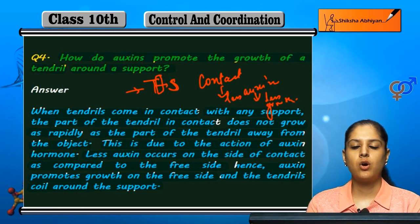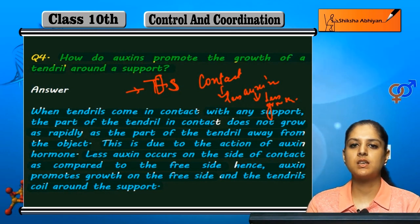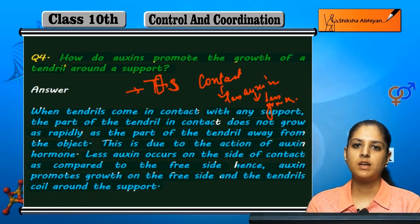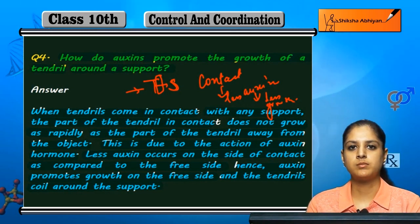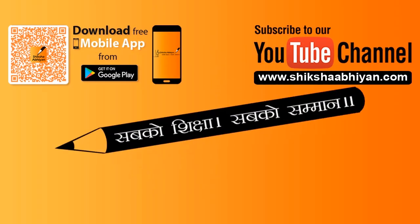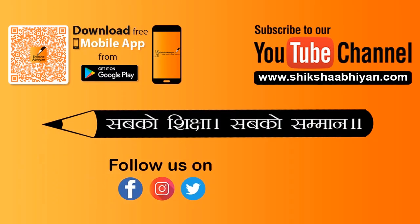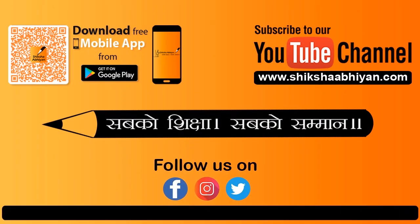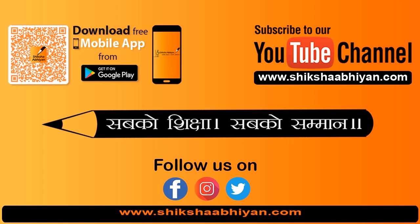So auxins is tarike se tendril ki growth ko promote karte hain.